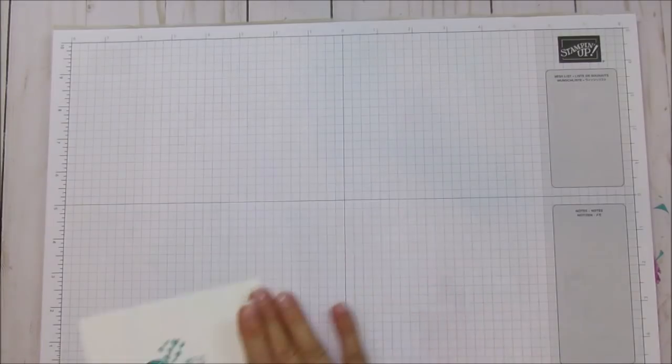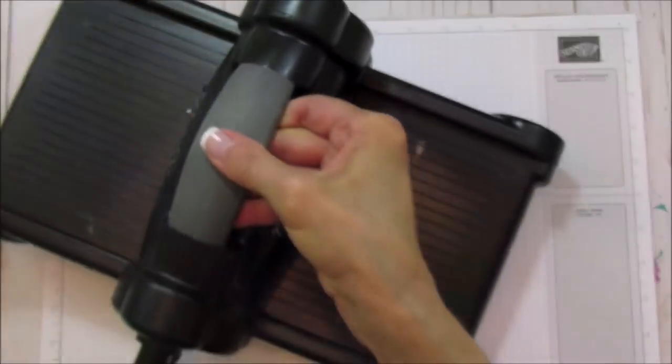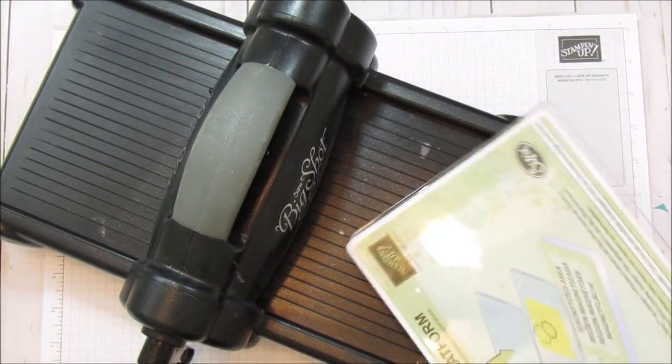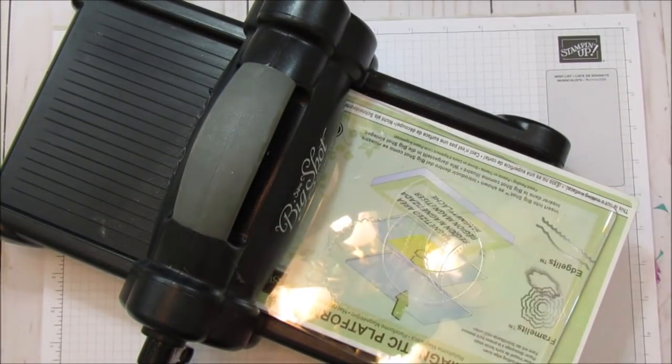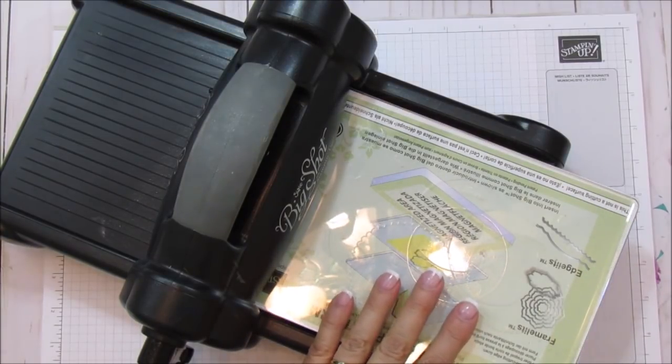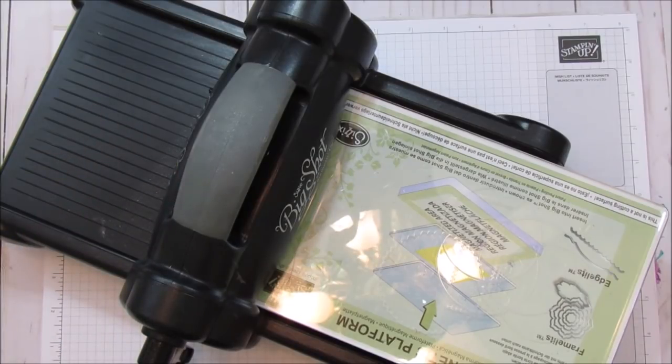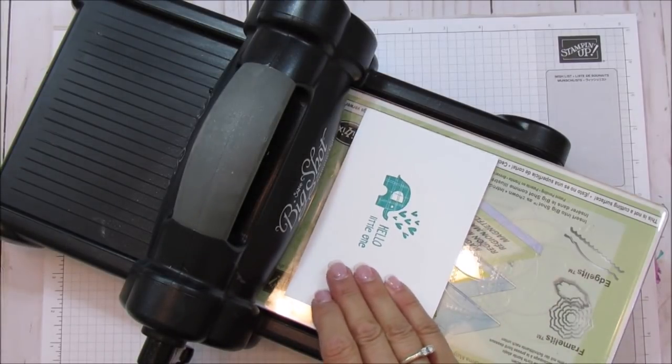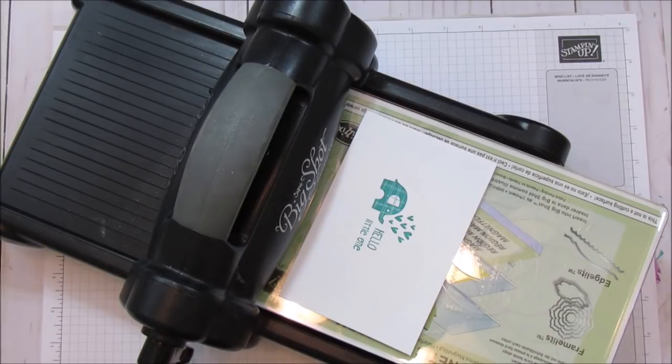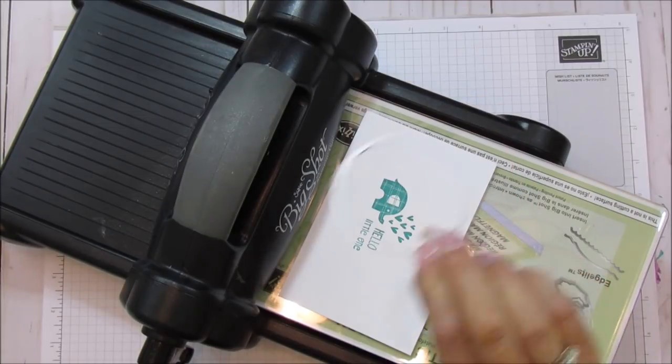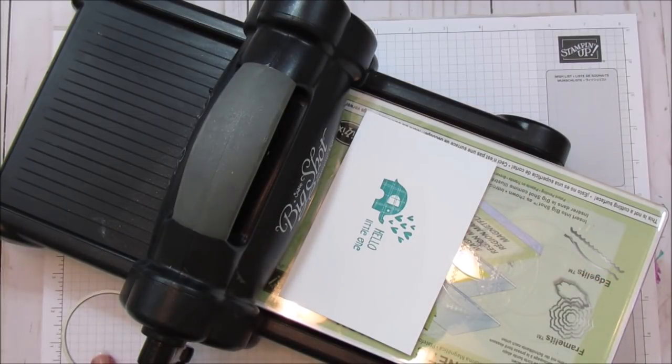That is our stamping. Now we can bring up the Big Shot and get this all ready to go. I am using my magnetic platform. Look how nice. I finally got some new plates. I go through these plates so fast. I've tried everything to straighten my old ones out. I decided it's just worth it to me to just buy new plates.